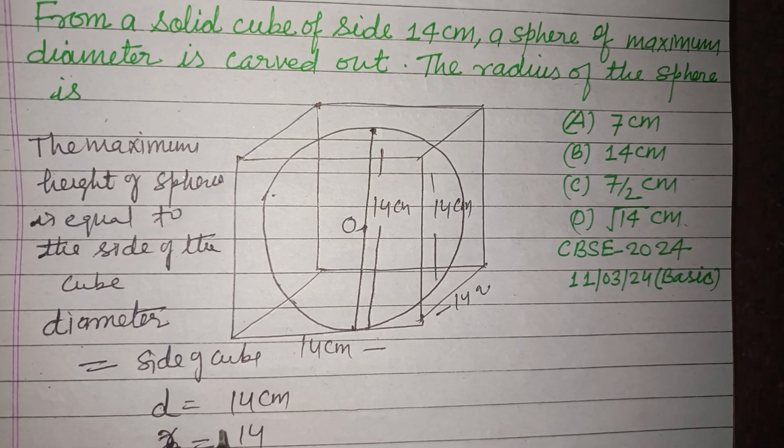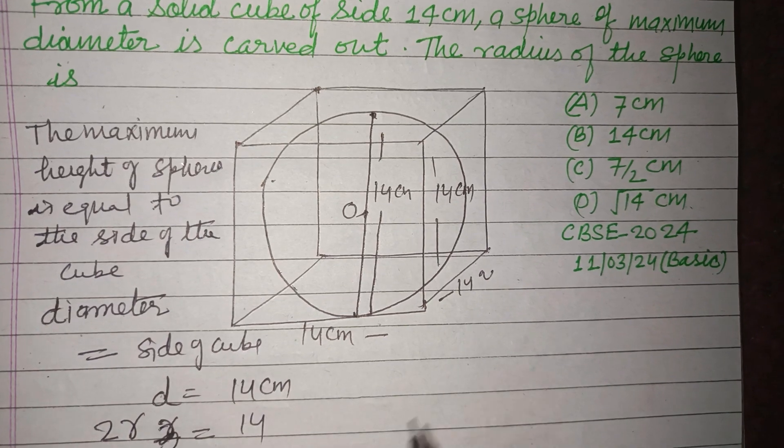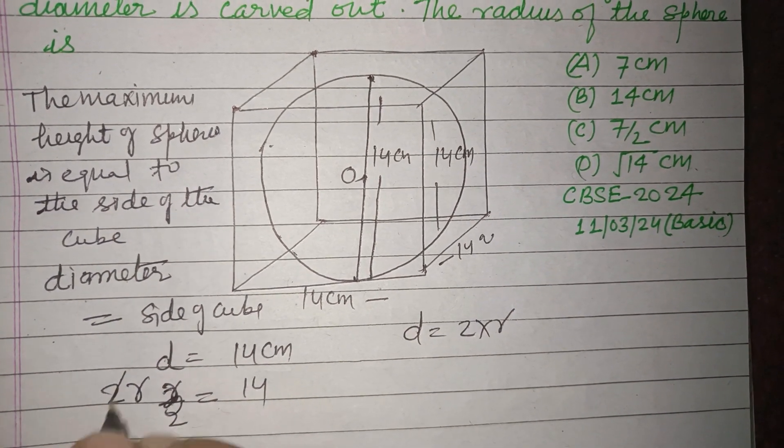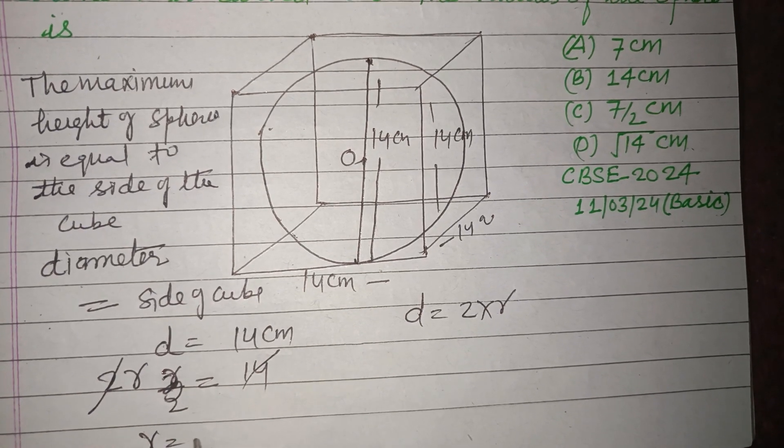So d equals 2r, not r by 2, because diameter equals 2 times radius. So when we divide this, r equals 7 cm.